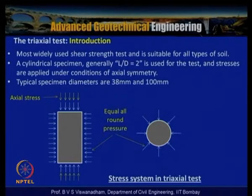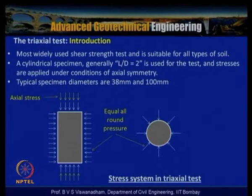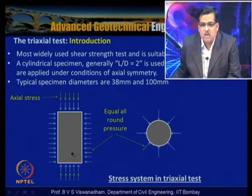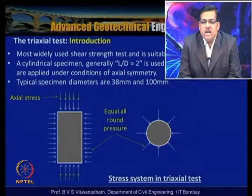The triaxial test is the most widely used shear strength test, suitable for all types of soil. A cylindrical specimen with L/D equal to 2 is used so that the principal planes remain as principal planes during all stages of testing. The radial and horizontal planes remain as principal planes throughout. Typical specimen diameters are 38 mm, 100 mm, and 300 mm, with larger sizes also becoming common.